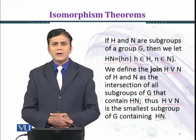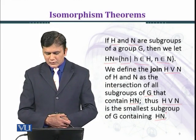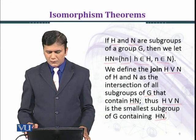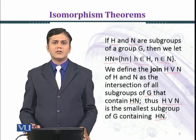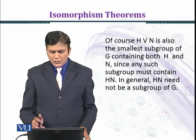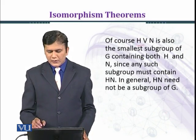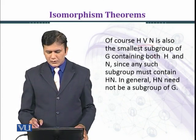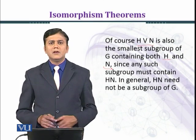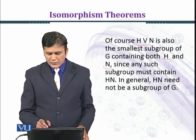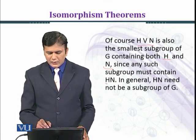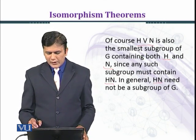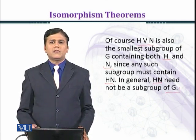This is the important thing which we have noticed: H∨N is the smallest subgroup of G containing H and N. Of course, H∨N is also the smallest subgroup of G containing both H and N, since any such subgroup must contain H and N. In general, HN need not be a subgroup of G.